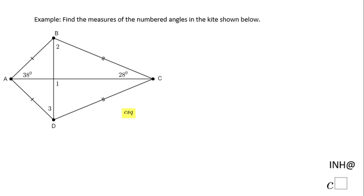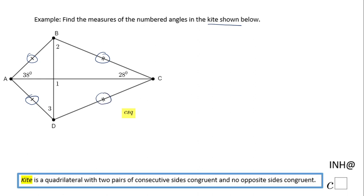Welcome or welcome back to I Need Help at C Squared. In this example we have a kite and we need to find angles 1, 2, and 3. Notice that this is a kite because these two consecutive sides are congruent and these two consecutive sides are congruent, and opposite sides are not congruent. That is the definition of a kite.